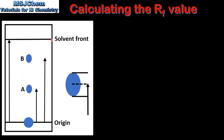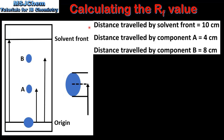The distance travelled by the solvent is known as the solvent front. The distance travelled by the two components is measured as halfway between the bottom and the top point. Here we have the distance travelled by the solvent front, the distance travelled by component A, and the distance travelled by component B.